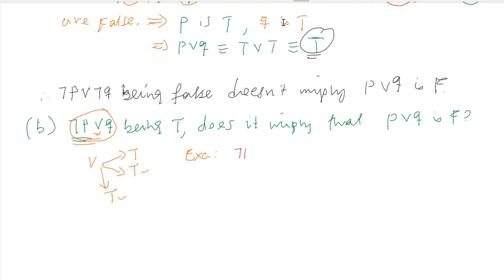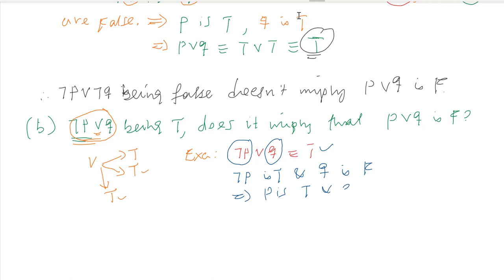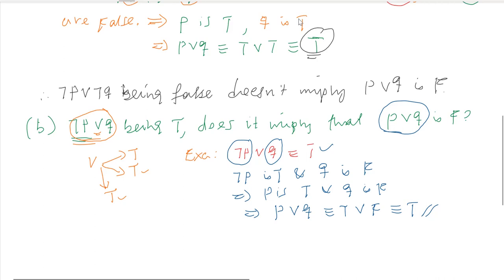Let's take an example. Assume negation of P is true and Q is false — then true or false is true, so the condition holds. This implies P is false and Q is false... wait, P is true and Q is false. So P or Q equals true or false, which by the law of disjunction is true.